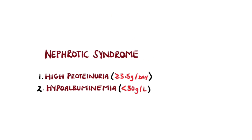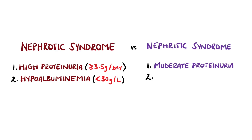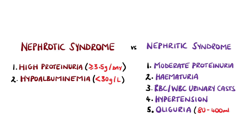Nephritic syndrome is different in that there is less proteinuria, but also the presence of hematuria and red blood cell or white blood cell casts in the urine, hypertension and oliguria, which is a reduced urine output, typically between 80 and 400 millilitres per day.